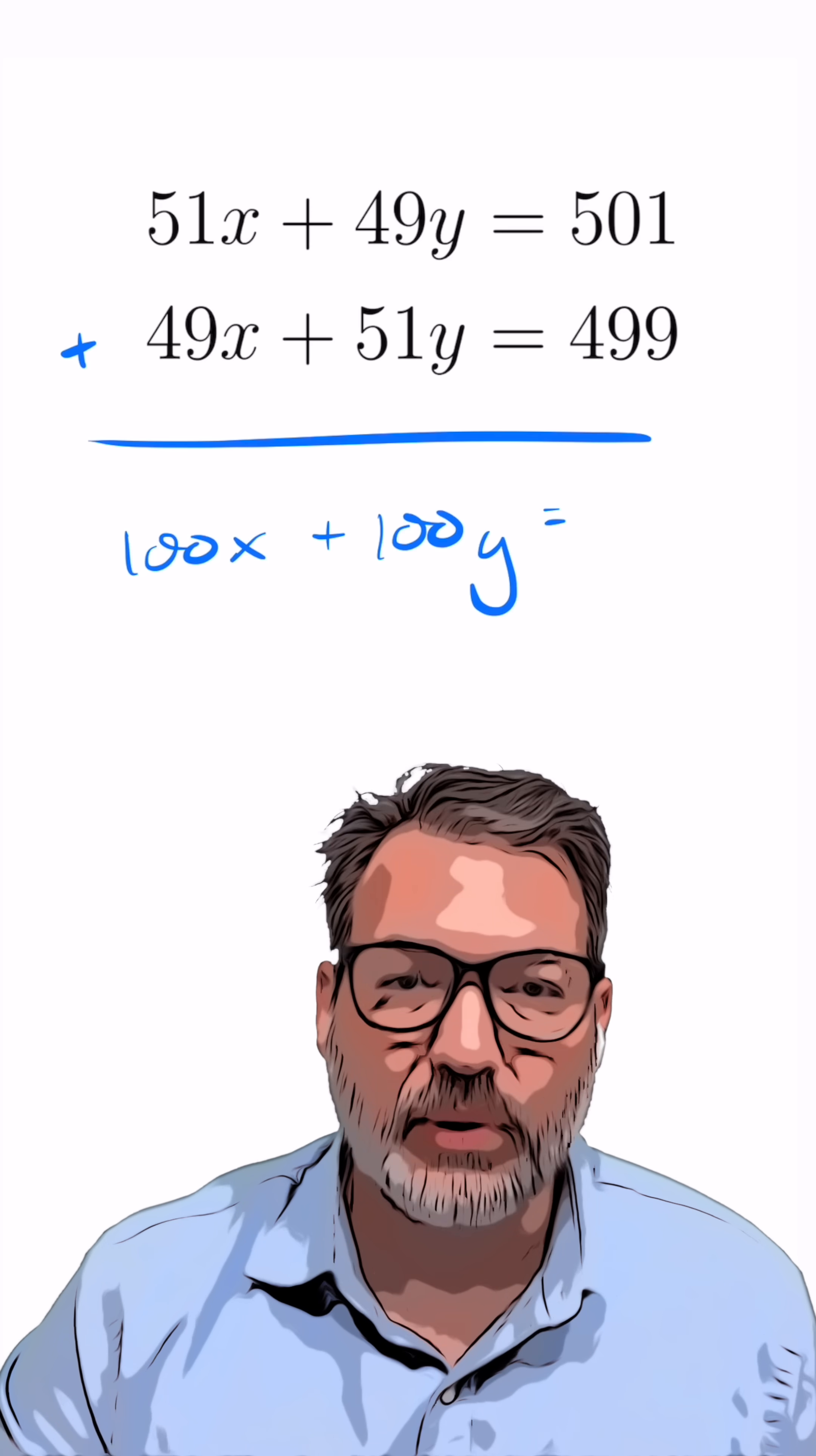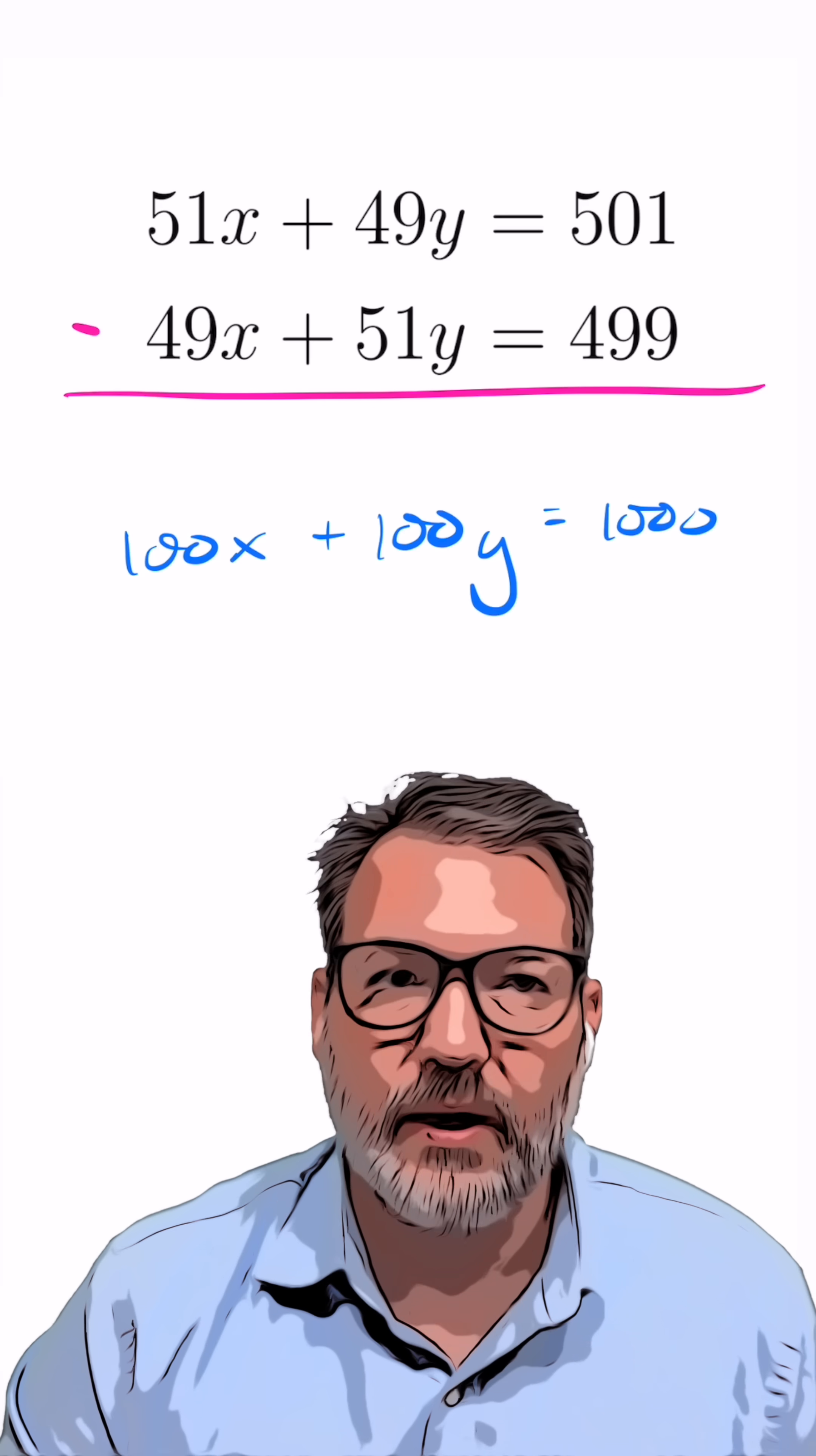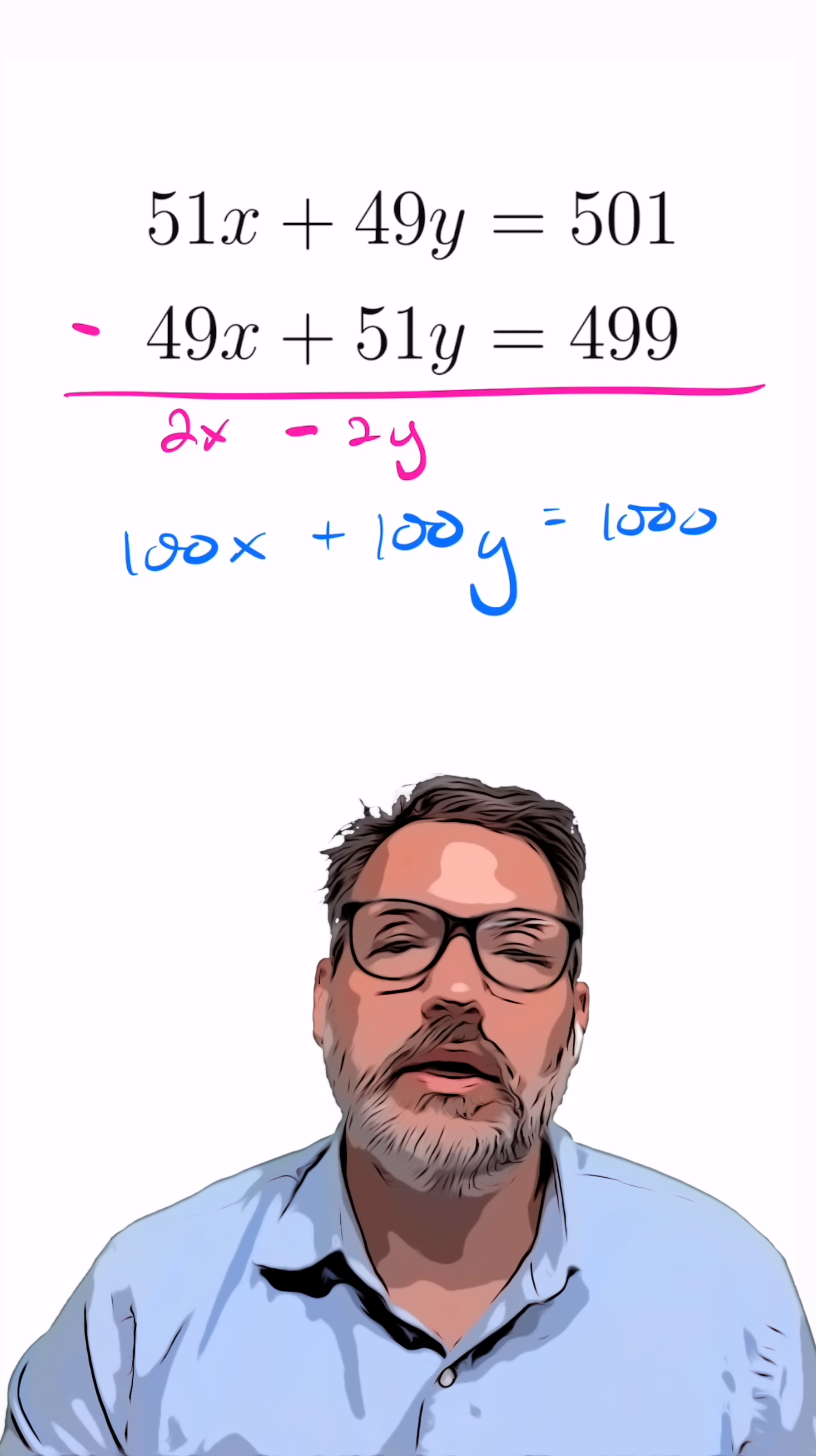Instead, we get 100x plus 100y equals 1,000. And if we subtract the equations instead, we also don't get rid of x or y. We get 2x minus 2y, since 49 minus 51 is negative 2, equals 2.